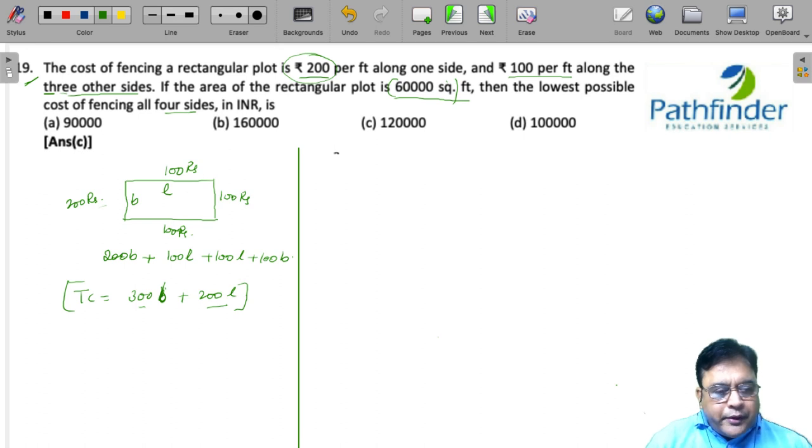Now, one way to solve could be that, you know, you just say L into B is equal to 60,000 and find out by trial and error different combinations of L and B, which will give you a minimum value of this. But that will be very time consuming. And since you have four options, you could also use the options judiciously.